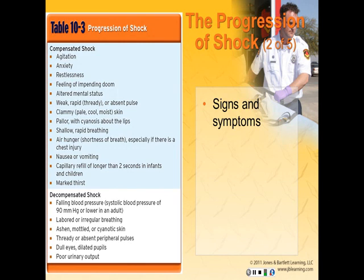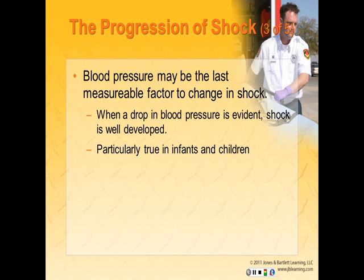Decompensated shock is the late stage as blood pressure starts falling — systolic blood pressure of 90 mmHg or lower in an adult. Signs and symptoms include labored or irregular breathing, ashen, mottled, or cyanotic skin, thready or absent peripheral pulses, dull eyes and dilated pupils, and poor urinary output. The final stage, irreversible shock, is the terminal stage when any type of transfusion will not be enough to save the patient's life — which is why shock must be recognized and treated early. Blood pressure may be the last measurable factor to change in shock, particularly true in infants and children who can maintain blood pressure until they have lost more than half of their circulating blood volume.